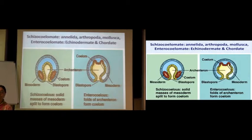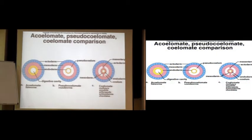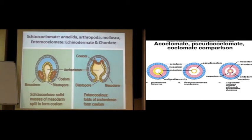When you say schizocoelmates and enterocoelmates, where does this difference lie? One thing is sure — you are talking about everything with respect to mesoderm. What happens is that this particular mesoderm, when it is going to form the coelom, the cavity, it splits in a particular way. The pattern of formation of the cavity is different, and that is why you give it the new name schizocoelmates.